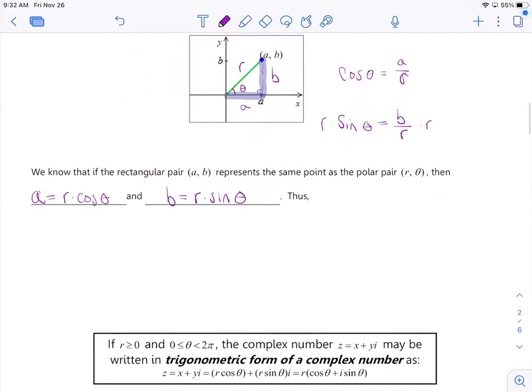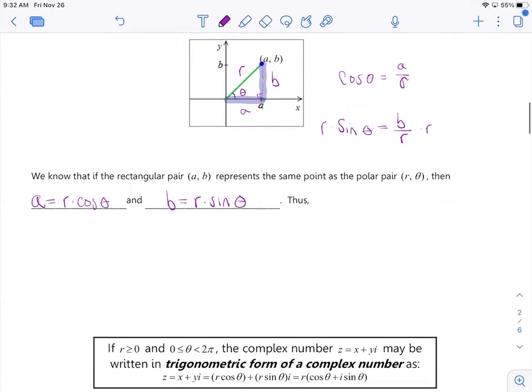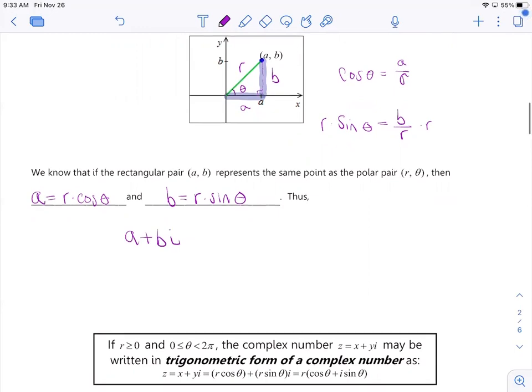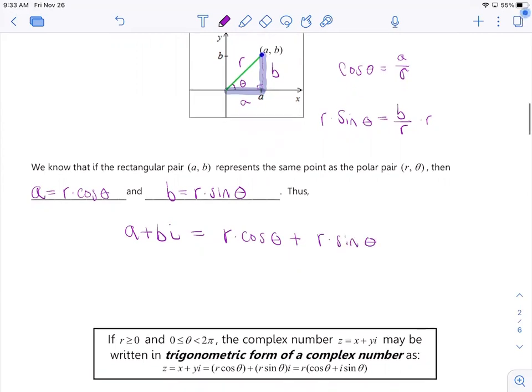So what this gives us in terms of our complex numbers is remember we have A plus Bi is a complex number. Well, now we can rewrite this as R times cosine theta plus, well now our B is R times sine theta, and then this is times that i. Now because they both have R, I can go ahead and factor it out, and we'll put that i in front for notation purposes.